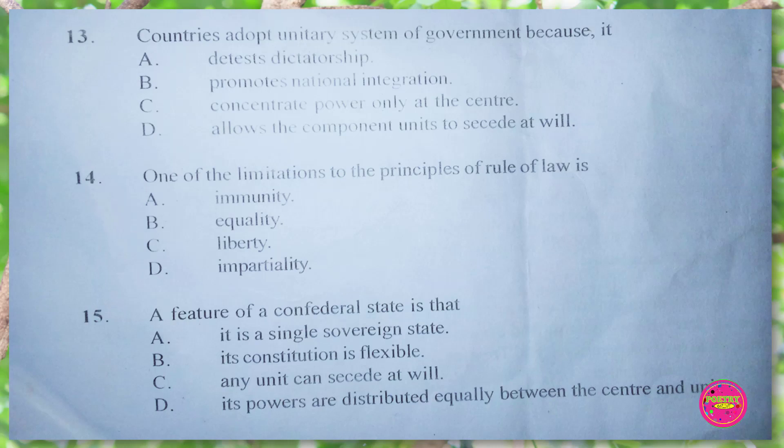Question 15. A feature of a confederal state is that: A. it is a single sovereign state, B. its constitution is flexible, C. any unit can secede at will, D. powers are distributed equally between the center and units. The correct answer is C. any unit can secede at will.